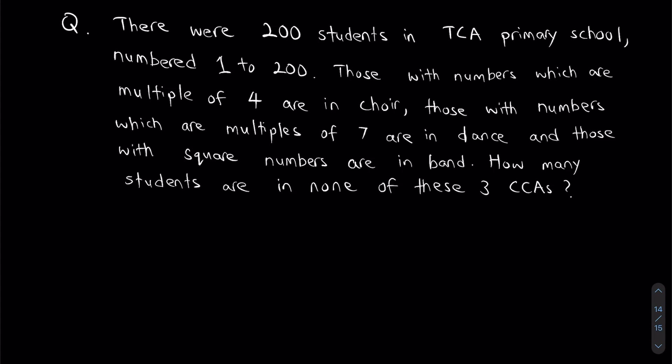Now, there were 200 students in TCA Primary School. They were numbered from 1 to 200. Those with numbers which are multiples of 4 are in choir. Those with numbers which are multiples of 7 are in dance. And those with square numbers are in band. How many students are in none of these three CCAs?